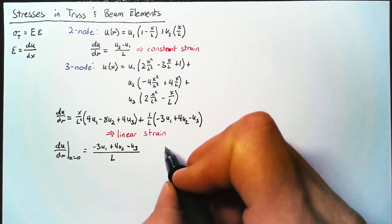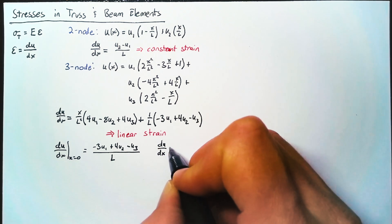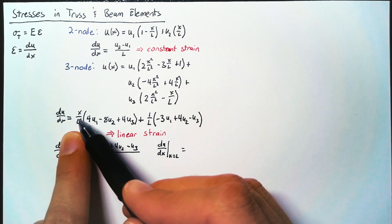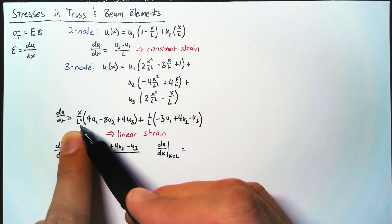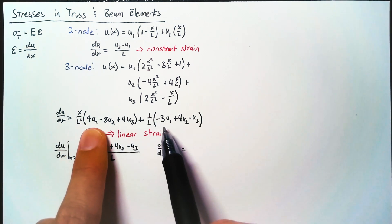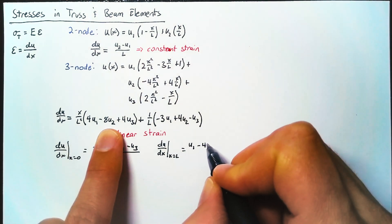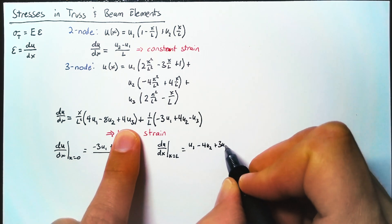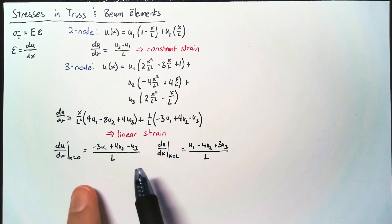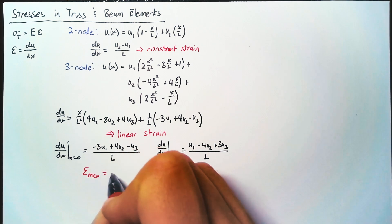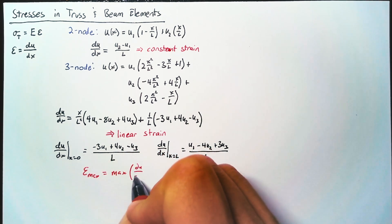And then we also need to do the same thing when X is equal to L. So when we do that, this leading fraction becomes 1 over L, so we can just add these together. So this becomes U1 minus 4U2 plus 3U3 all over L. And you can see from this that there's some level of symmetry, which is nice. That's what we'd hope to see.